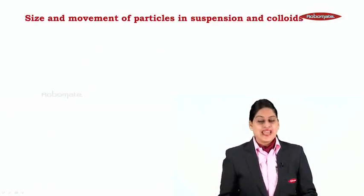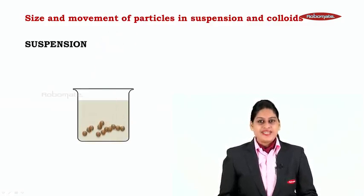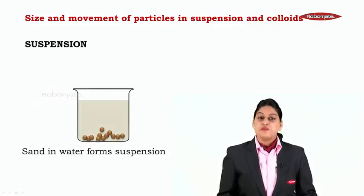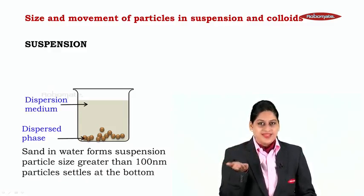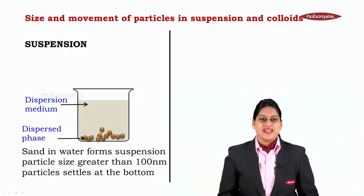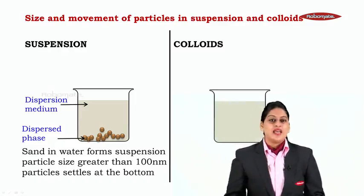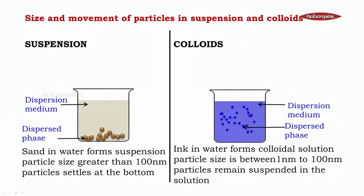Now let us see the size and movement of particles in suspension and in colloid. For suspension, I have taken sand in water. The particle size is greater than 100 nanometers, and if we keep it undisturbed, the particles will settle at the bottom — sand at the bottom becomes the dispersed phase and the top part becomes the dispersion medium. For colloids, using ink in water as an example, the particle size is between 1 nanometer to 100 nanometers, and the particles remain suspended throughout the solution, forming a dispersed phase and dispersion medium.